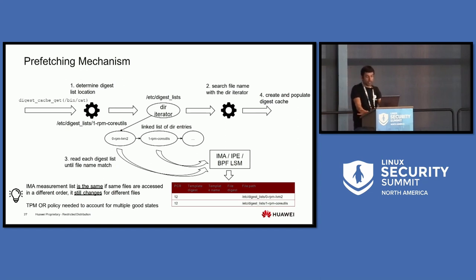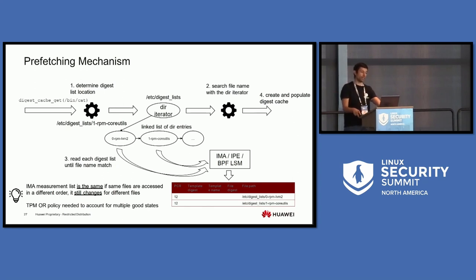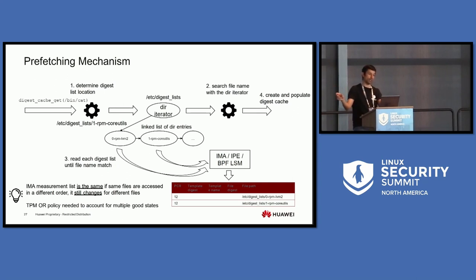Now the PCR is predictable because we always get the same measurement list. However, the list changes every time a new package is included, since the PCR is extended for every measurement entry. Therefore, the TPM key sealing policy should be an OR condition covering a value for each entry of the measurement list, allowing all valid combinations.